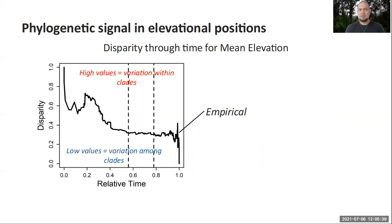We were also particularly interested in the phylogenetic structure, or phylogenetic signal, both in the elevational positions of a species and in these potential adaptations. This figure shows a disparity-through-time plot for mean elevation. High values of disparity suggest that species or clades at a specific age have a lot of the total variation in these traits, meaning clades have a lot of variation in elevational position, while low values reflect variation that mainly happens from one clade to another.